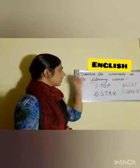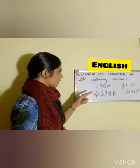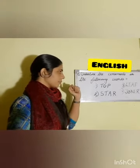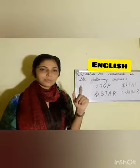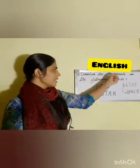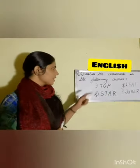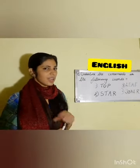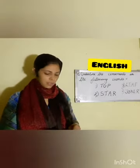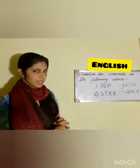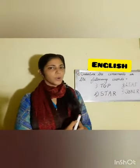Look at the word, my dear children. Underline the consonants in the following words. Our next question is: underline the consonants in the following words. The first word is top, second is term, third is sleeve, and fourth is joker. What is our activity? Underline the consonants in the following words. Now I am going to do the first word.